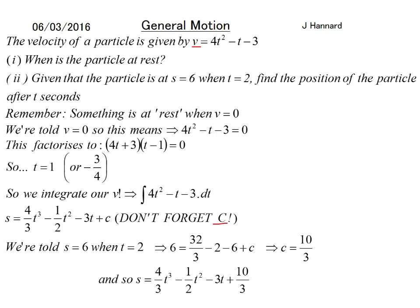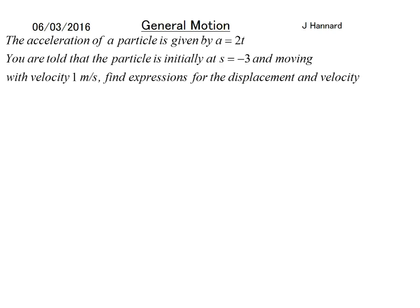That's an awful equation but one to track our displacement. If you wanted to, you could differentiate v and get your a. But let's do another example. The acceleration of a particle is given by a = 2t. You are told that the particle is initially at s = -3 and moving with a velocity of 1 m/s. Find expressions for the displacement and the velocity.